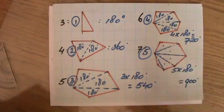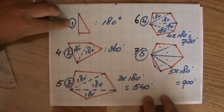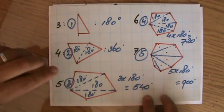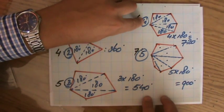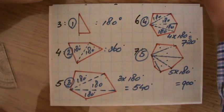Now, maybe you see some sort of pattern here. For a three-sided figure, I have one times 180. For a four-sided figure, I have two times 180. For a five-sided figure, three times 180. Six-sided, four times 180. Seven-sided figure, five times 180.